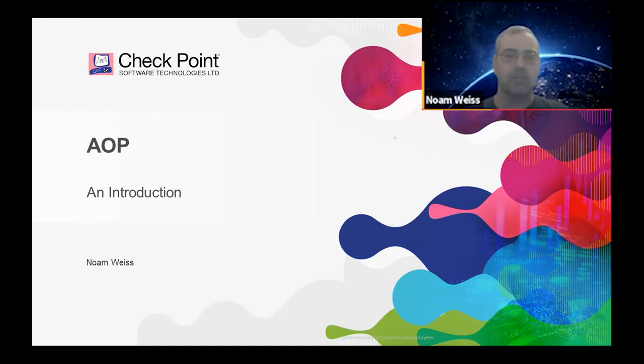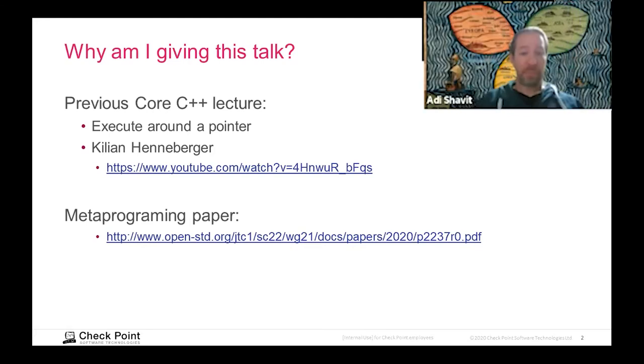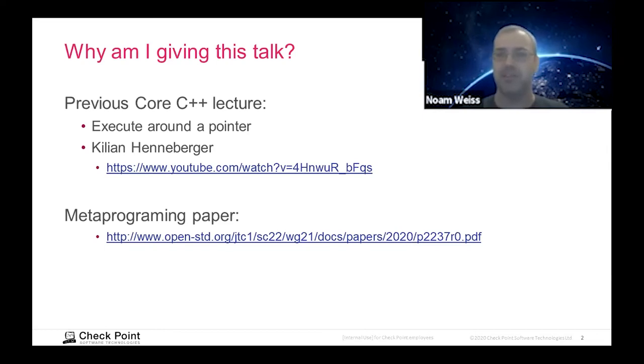I wanted to start by saying why am I giving this talk in the first place. I started because of a previous lecture that was here in Core C++ by Kilian. There's a link to the YouTube where he gave a talk about executing around the pointer. Basically, how can we have a function pointer and execute some code around that invocation. And since then, there is another metaprogramming paper that I shared last time. So thank you, Inbal. It's a very interesting paper. I'm still working through it. It's quite a large paper.